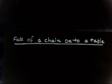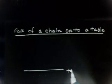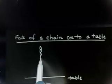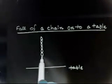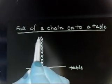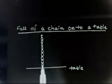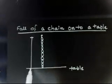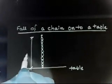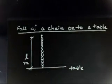Let us discuss the concept of fall of a chain onto a table. This is my table, and there is a chain. Initially, one end of the chain is just touching the table and the other end is in the vertical. Somebody is just holding this chain. The length of this chain is L and the mass of the chain is M.